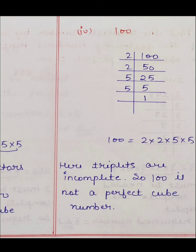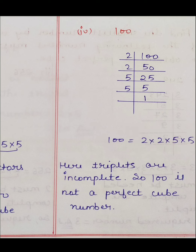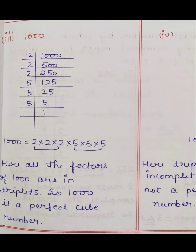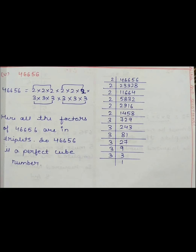Fourth number is 100। 100 के prime factors: 2 मिला 2 times और 5 मिला 2 times। यहाँ पर ना तो 2 के ही triplet complete हो रहे हैं और न ही 5 का triplet बन पा रहा है। Here triplets are incomplete, so 100 is not a perfect cube number।